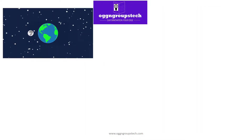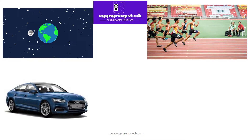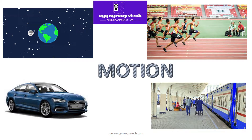We are going to start a new chapter called motion. Here we have four examples of motion: the moon revolving around the earth, an athlete moving in a forward direction, the motion of a car, and a train. Motion means any object which moves — it can be living or non-living.